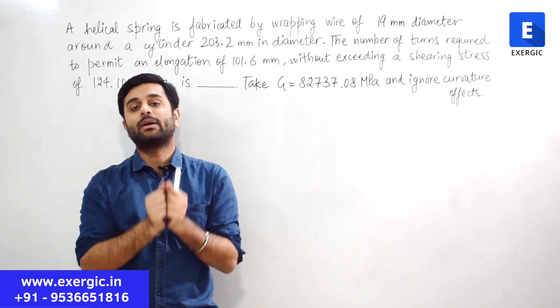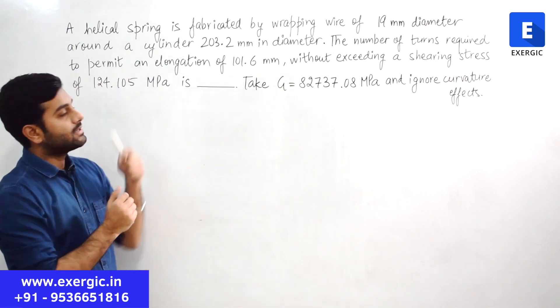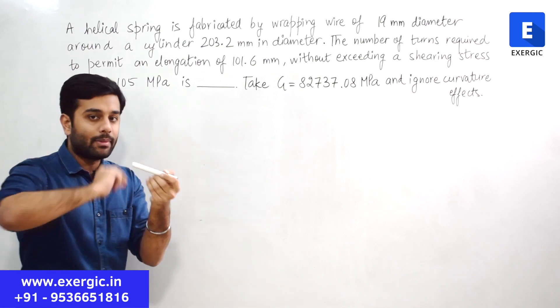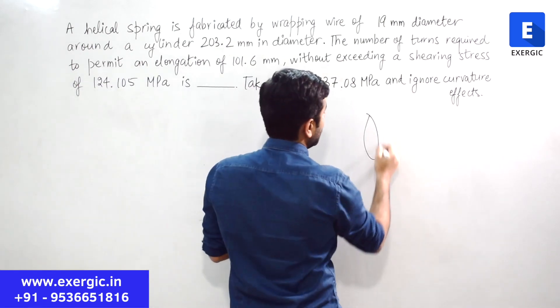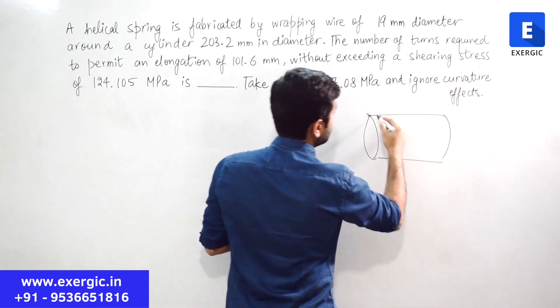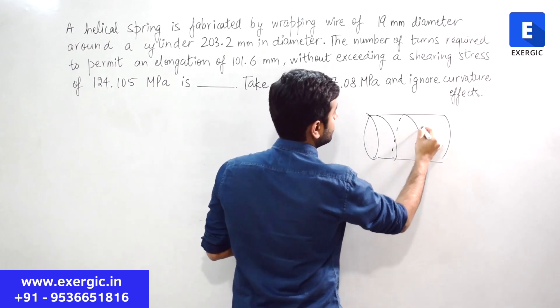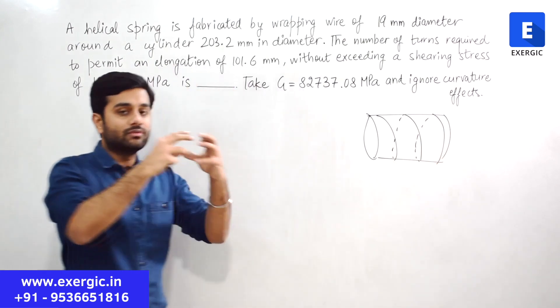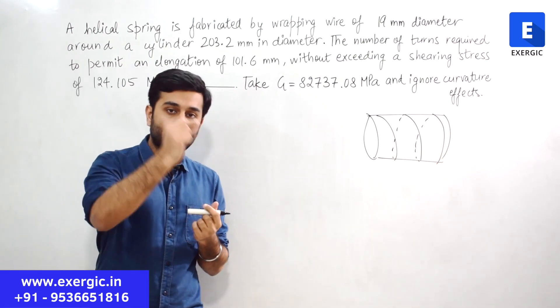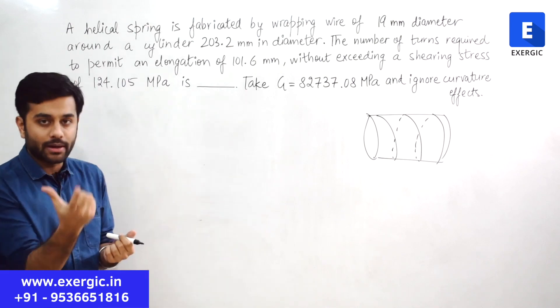The outer shape of it will closely relate with the shape of cylinder. In this case you have a cylinder and you are wrapping the wire over that cylinder. If you wrap this wire over cylinder and then you remove the cylinder, what shape you will be having? A helix shape, that is the shape of the spring.